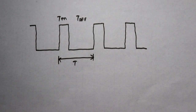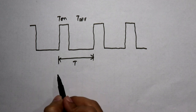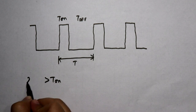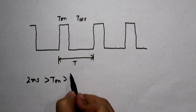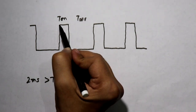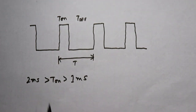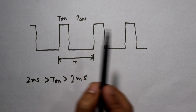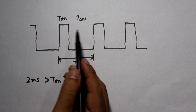As given in the datasheet of the servo motor, it is stated that the servo motor responds if the T-on time is less than 2 ms and higher than 1 ms. So we have to generate a PWM signal using the 555 which has a T-on between 1 ms and 2 ms.